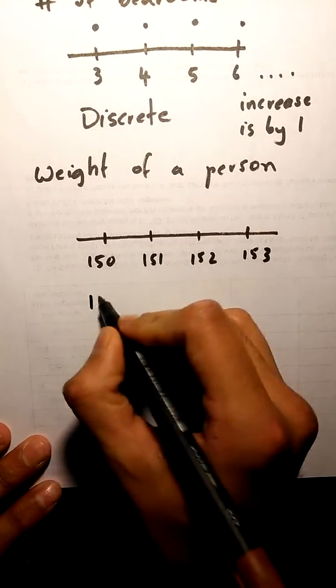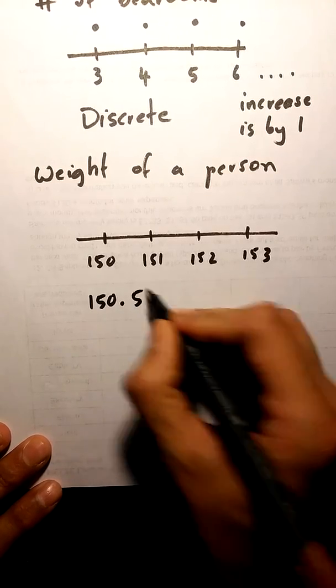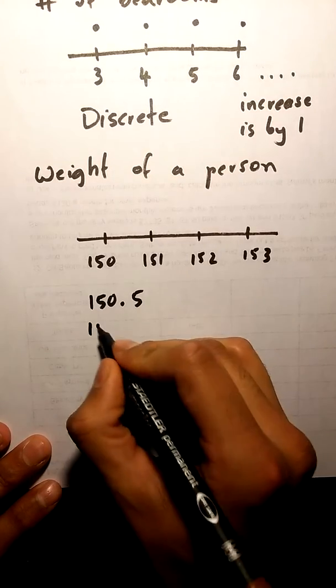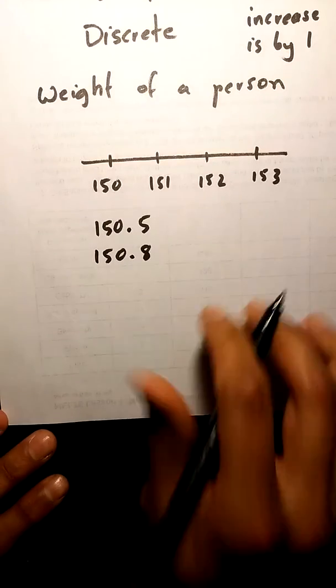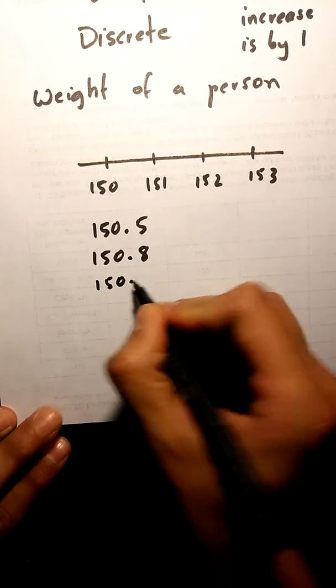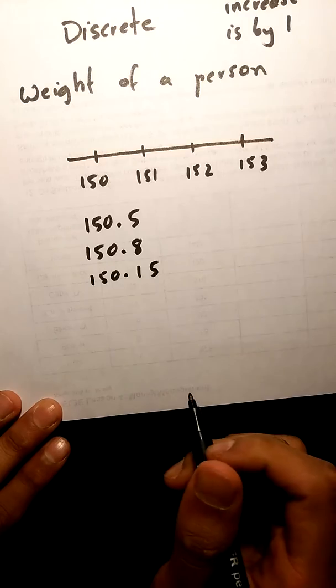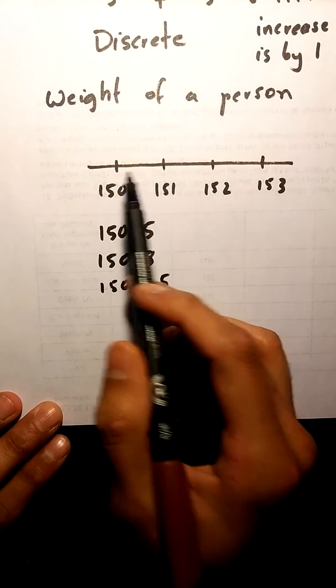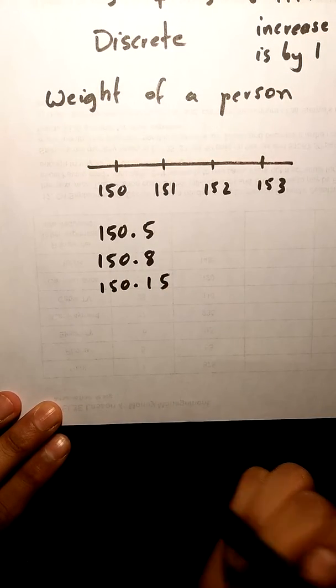Well yes, your weight can be 150.5 for example. It can be 150.8, 150.15. Honestly, it can be any value between those two numbers.